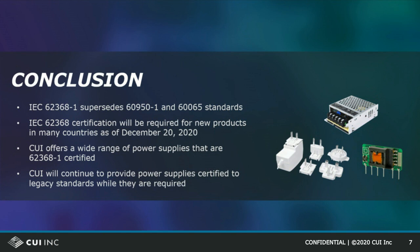We suggest a few things to remember as a quick summary. First, Safety Regulation IEC 62368 supersedes Safety Regulations 60950 and 60065. Some countries will require 62368 on some products as of December 20th, 2020. CUI already offers many power supplies with IEC 62368 certification to accommodate the needs of products being released in those markets this year. Some countries will not require 62368 until a later date — some of those will accept 62368 certifications until then, while others will require legacy certifications until then. For those products requiring legacy certifications, CUI will continue to offer power supplies with legacy certifications.